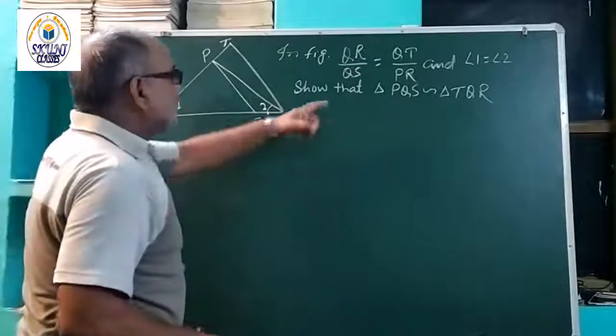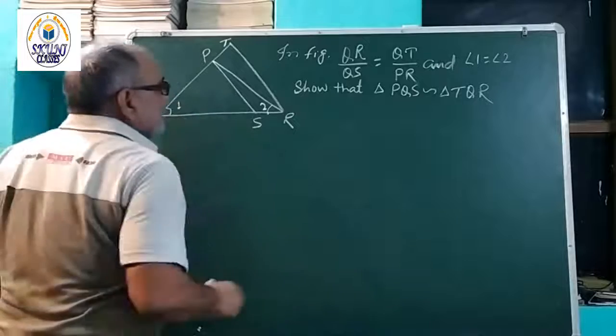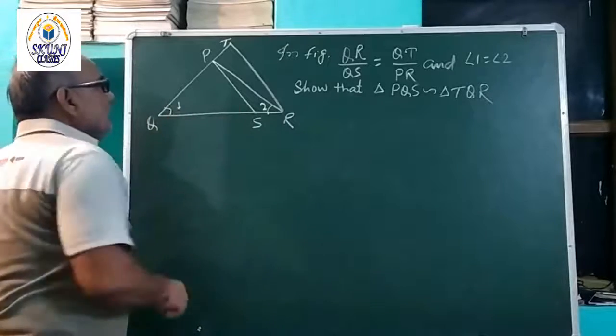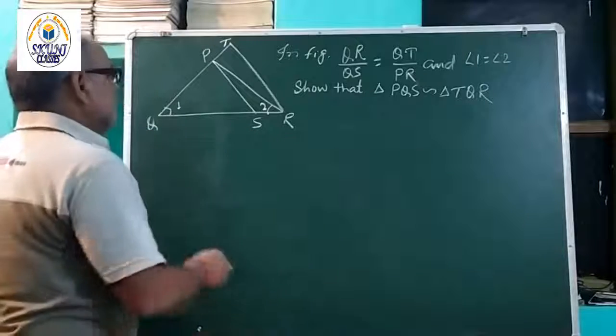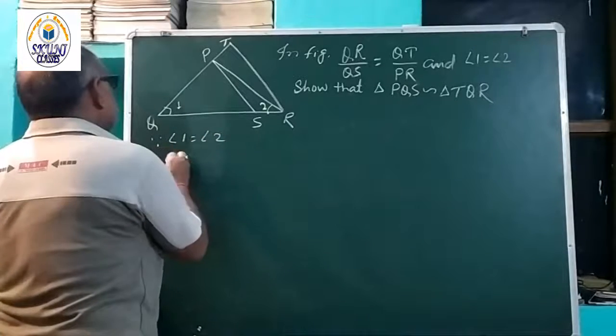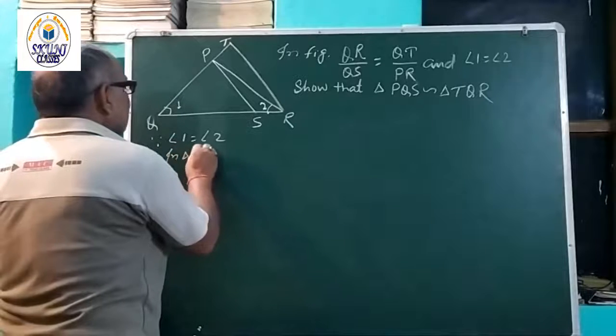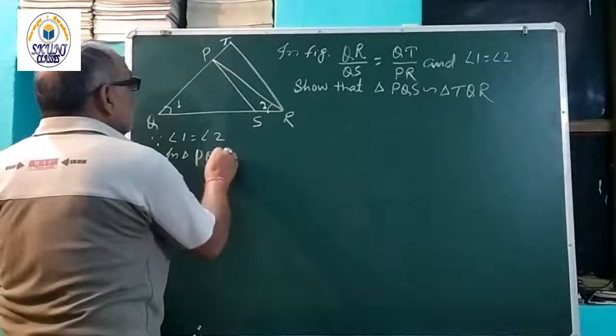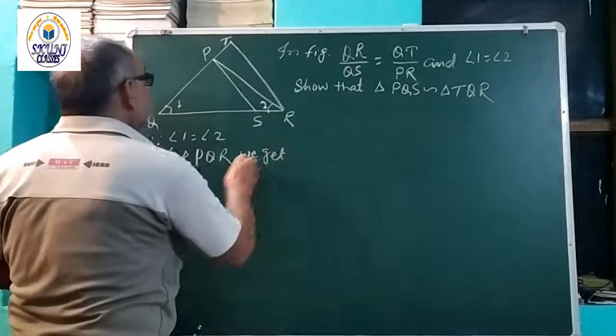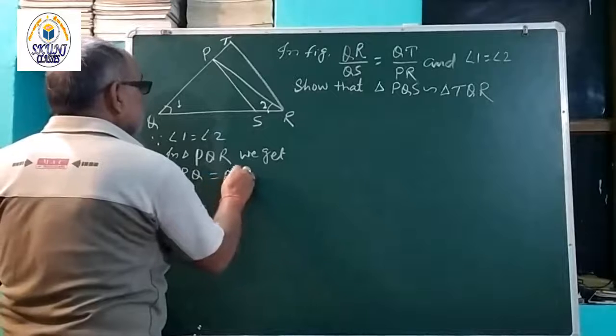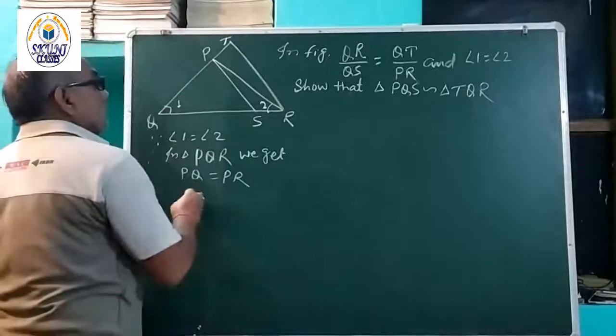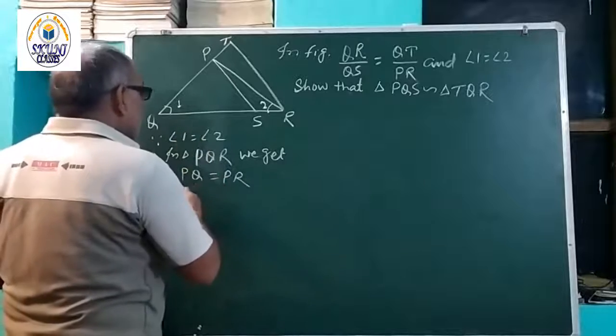Hence, triangle PQR is similar to TQR. So we can see that angle 1 is equal to angle 2, which means PQR is an isosceles triangle. Therefore, in triangle PQR, we get PQ is equal to PR.